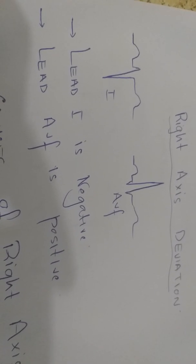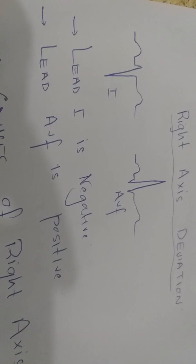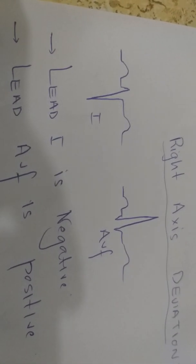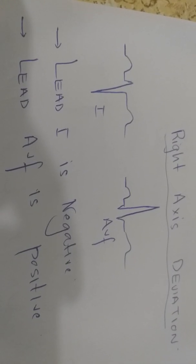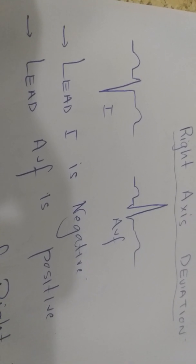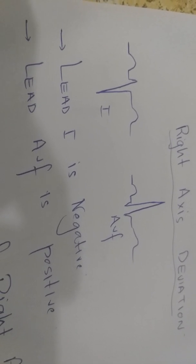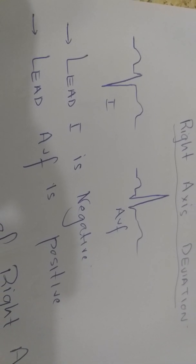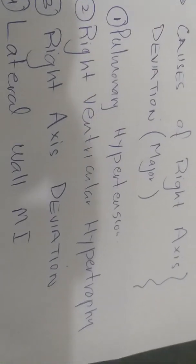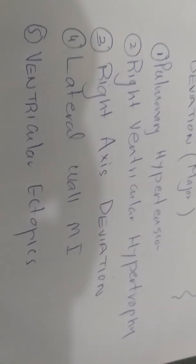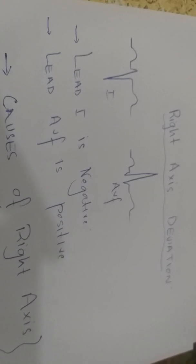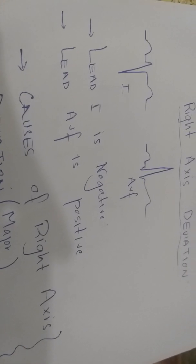Another very important presentation in emergency departments and ICUs is right axis deviation, seen in pulmonary hypertension, asthmatics, obese patients, and smokers suffering from chronic bronchitis or emphysema. In right axis deviation, Lead 1 is a negative lead and Lead AVF is a positive lead — Lead 1 has a deep S wave and very small R wave, Lead AVF has a tall R wave and very small S wave. Other causes include right ventricular hypertrophy, lateral wall MI, and ventricular ectopics.